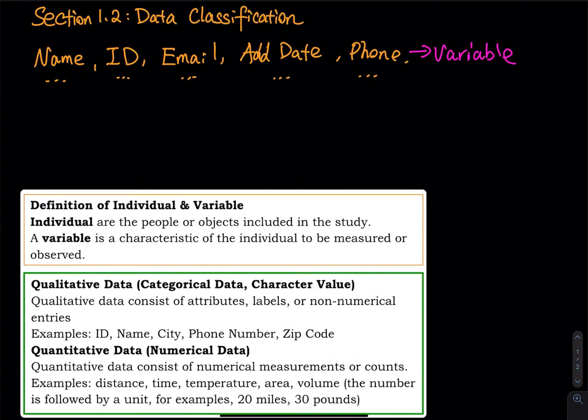So name is a variable, ID is a variable, email is a variable, add date, phone, they are variables. So if that is what I see in a roster, basically in this roster, I have five variables.